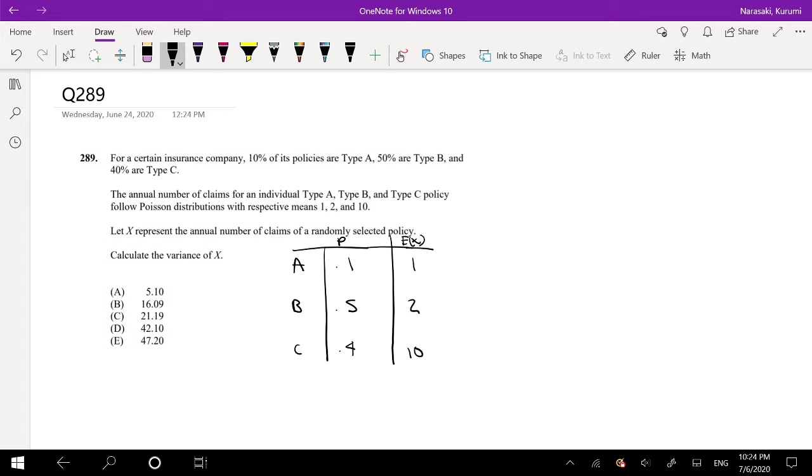X represents the annual number of claims for a randomly selected policy. Calculate the variance of X. So this is our beloved variance formula: the second moment minus the expectation, the whole thing squared.